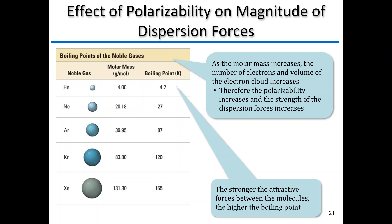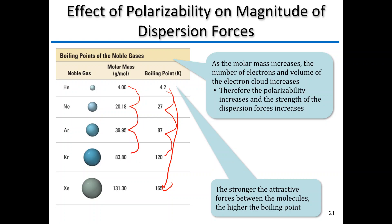For our first example, moving from helium down through the noble gases, notice that our molar mass is increasing as we go down, and notice what happens to our boiling point. We start at 4.2 Kelvin for the small helium atom and then jump all the way up to 165 Kelvin as we increase our molar mass. Each step, we're increasing molar mass and therefore increasing the boiling point as well. Bigger, heavier molecule means more electrons and stronger interactions — and one way we can look at that is just by looking at the boiling point.